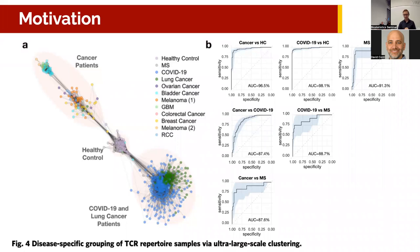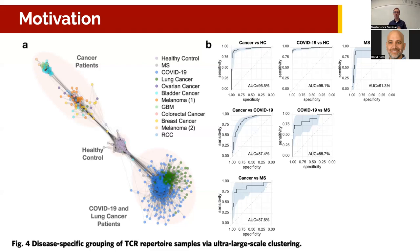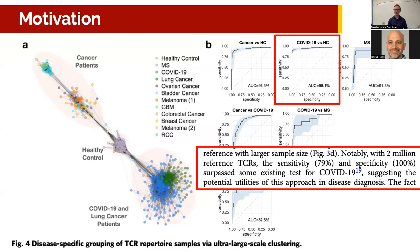What they were able to do with this data was take new outside samples that had one of these diseases — or didn't — and predict what disease they had. Looking just at COVID-19 versus healthy control, they were doing a pretty good job of distinguishing the two. This is purely based on a blood draw, looking at what T-cells are present — non-invasive and potentially very useful, and they mention it's better than some available methods for testing for COVID.